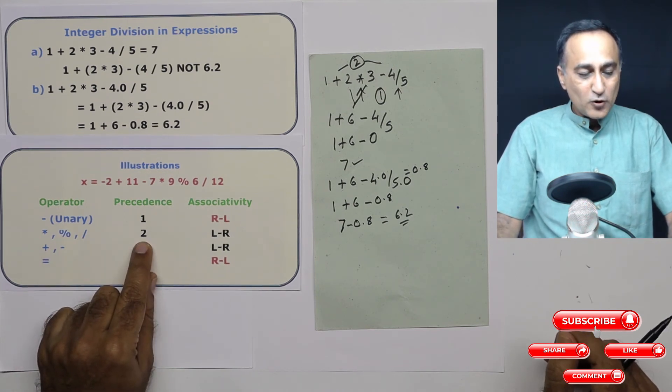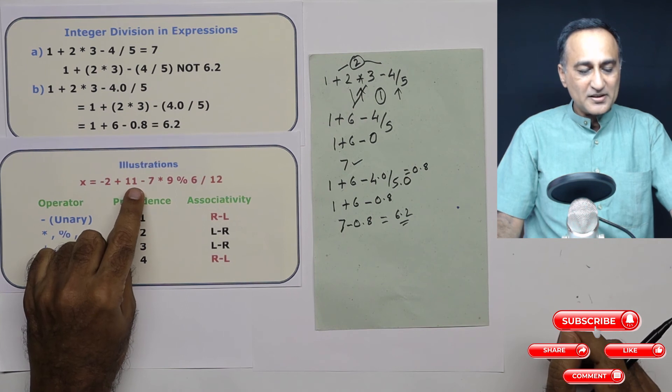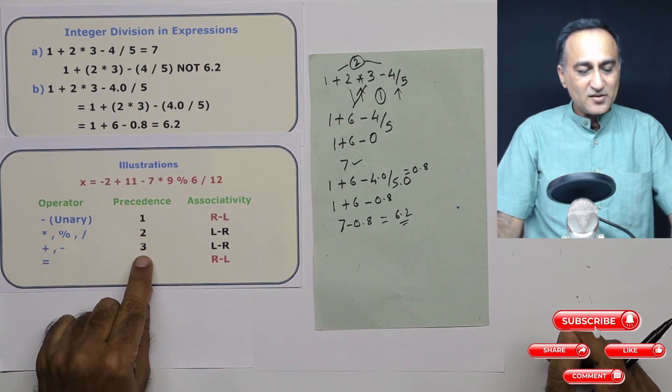Then this is followed by what? Plus minus, and that's it, plus and minus are the only two operators. This has got precedence number 3.